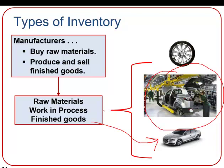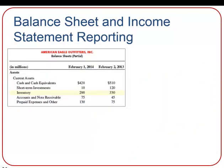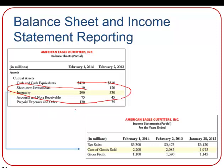Because inventory will be used or converted to cash within one year, and it's a resource to the business, it's reported on the balance sheet as a current asset. When a company sells its goods, it removes the cost from the inventory account — since they've sold it, it's no longer needed in inventory. At that point, it's reported on the income statement as an expense called cost of goods sold.